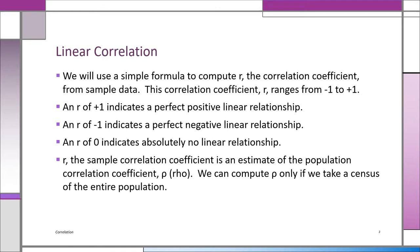R is a sample correlation because you're taking a sample — maybe 50, 30, or 100 — but it's a sample. You're not taking the correlation for the entire population. If you were going to do that, the population correlation coefficient is rho — that's the Greek R. You can only compute rho if you take a whole census. So R, in effect, is an estimate of rho.